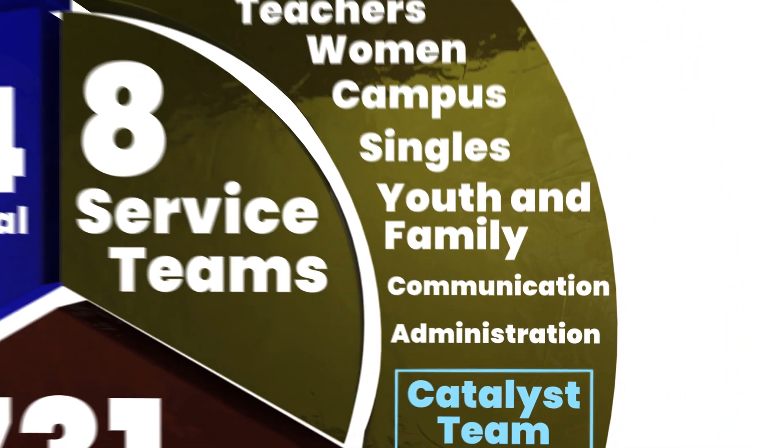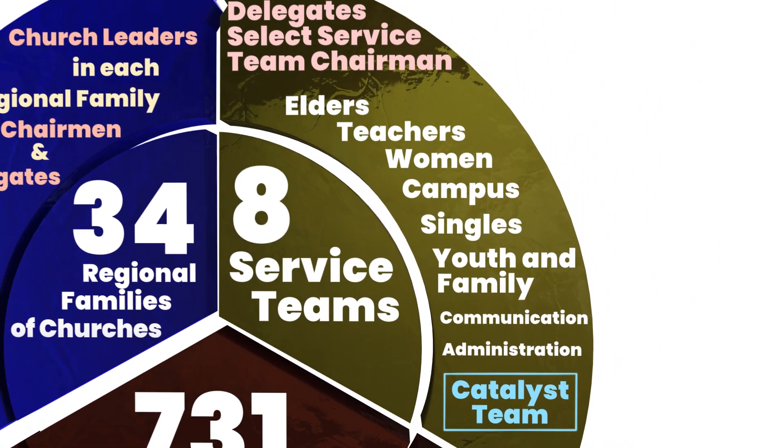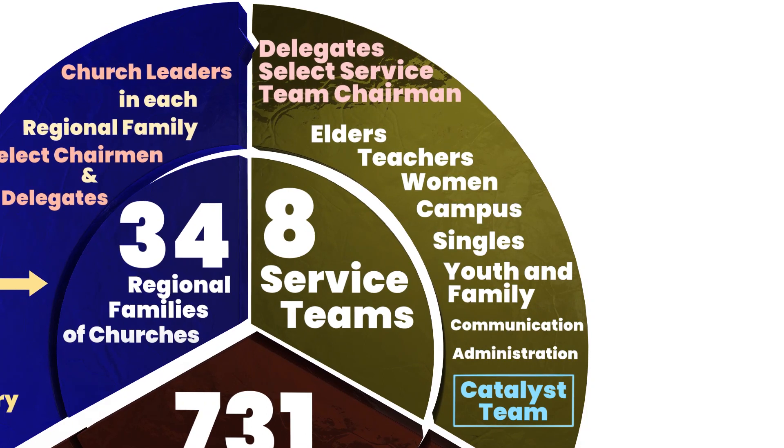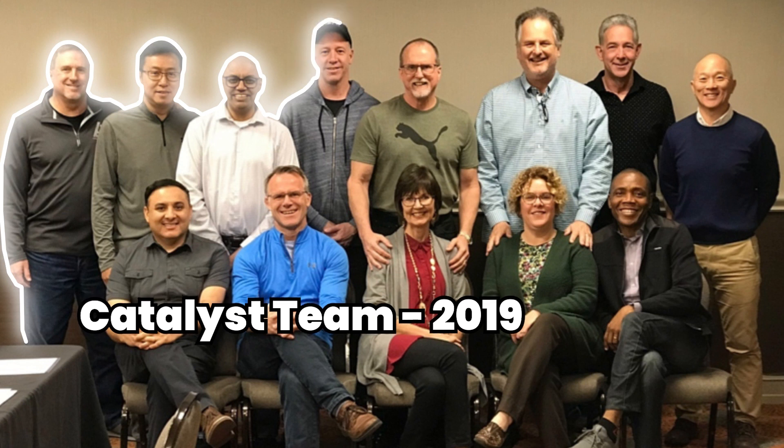Each member of the service teams and task forces must be a spiritual leader that is commended by his or her local leadership. And last but not least, we have the catalyst team. As the name implies, it does not have executive power for decision-making, but instead catalyzes the decision-making process necessary for global planning, involvement, and cooperation. The catalyst team includes a diverse membership, including two elders, one teacher, two women's ministers, and regional family chairmen.